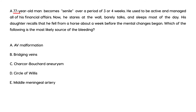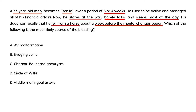Second vignette: a 77-year-old man becomes senile over three to four weeks. He used to be active and managed his finances; now he stares at the wall, barely talks, and sleeps most of the day. His daughter recalls he fell from a horse about a week before the mental status changes began. The question asks for the most likely source of bleeding. Classic presentation — traumatic event, blunt trauma to the head, he was okay, then gradual neurologic deterioration. In the dura area, bridging veins can rupture and lead to a subdural hematoma.